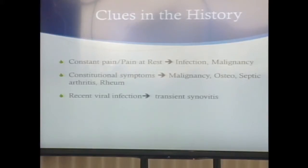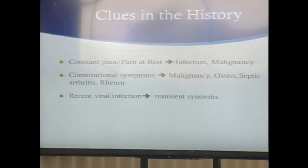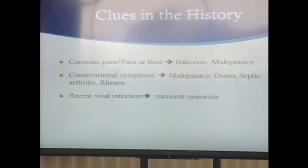Constant pain wouldn't be an overuse problem, because rest should make it better. So constant pain — worry about infection or malignancy. Constitutional symptoms — fever, chills, general malaise, loss of appetite, weight loss — think malignancy, infection, or rheumatologic problem. And transient synovitis of a joint is often associated with a recent viral or respiratory infection.